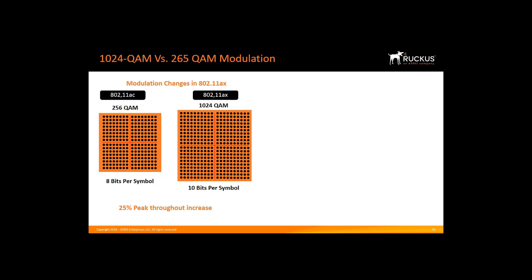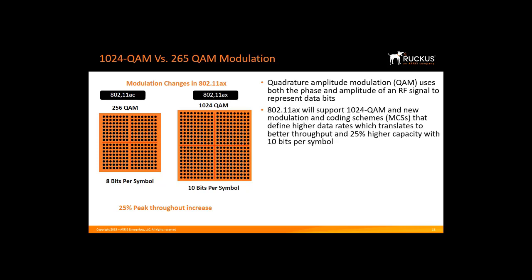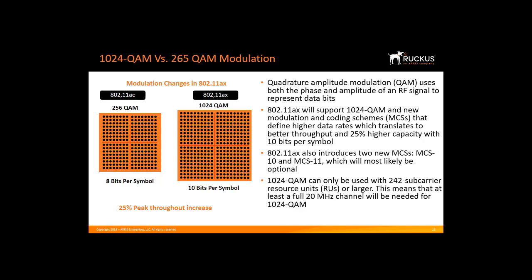Although the primary goal of 11ax is better efficiency, more speed isn't a bad thing. Quadrature amplitude modulation, or QAM, uses both phase and amplitude of an RF signal to represent data bits. 11ax will support 1024 QAM and new modulation encoding schemes, or MCSs, that define higher data rates, which translates to 25% higher capacity with 10 bits per symbol versus 8 bits in 256 QAM used in 11ac. 11ax also introduces two new modulation coding schemes, MCS-10 and MCS-11. 1024 QAM can only be used with 242 subcarrier resource units, or RUs, or larger, meaning at least a full 20 MHz channel will be needed.